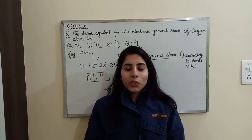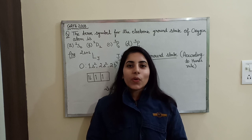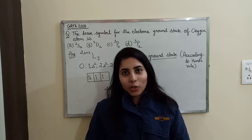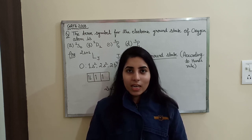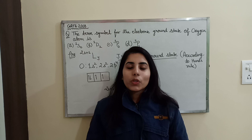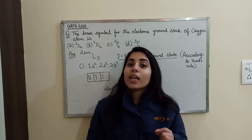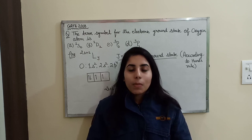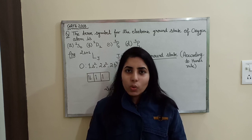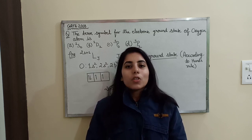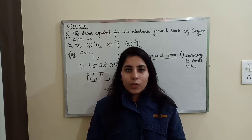Hello everyone, welcome to the YouTube channel Mission at Physics Exam. Today in this video I am going to discuss a question of atomic and molecular physics. This question has been asked in the GATE 2018 physics exam. It is related to a very important topic — how we can find the spectroscopic term for different states, specifically the ground state spectroscopic term symbol.